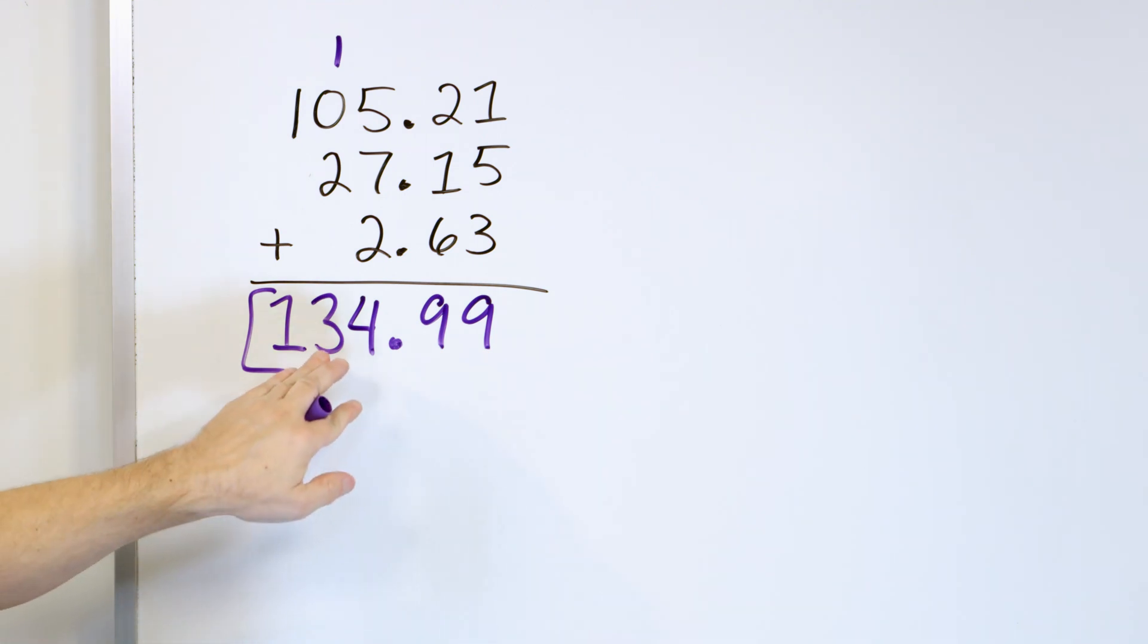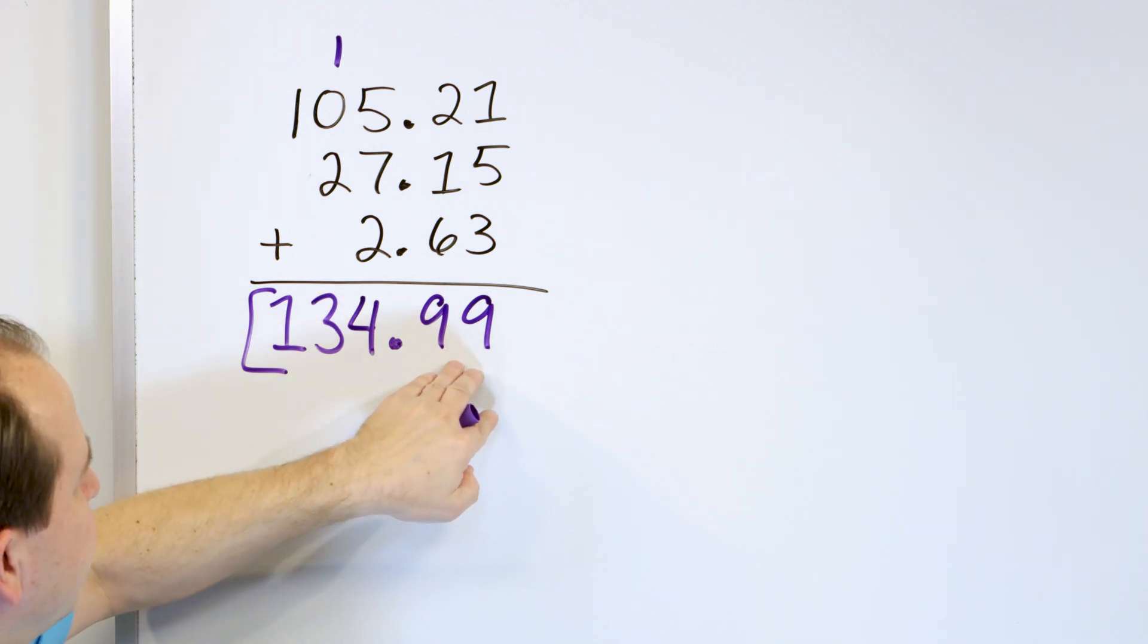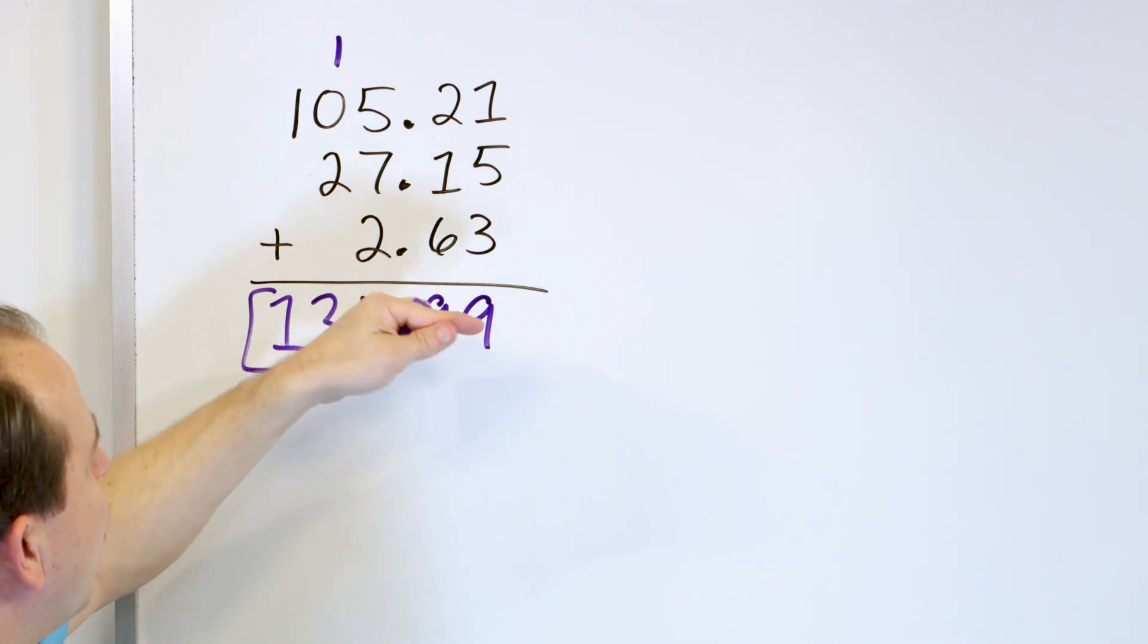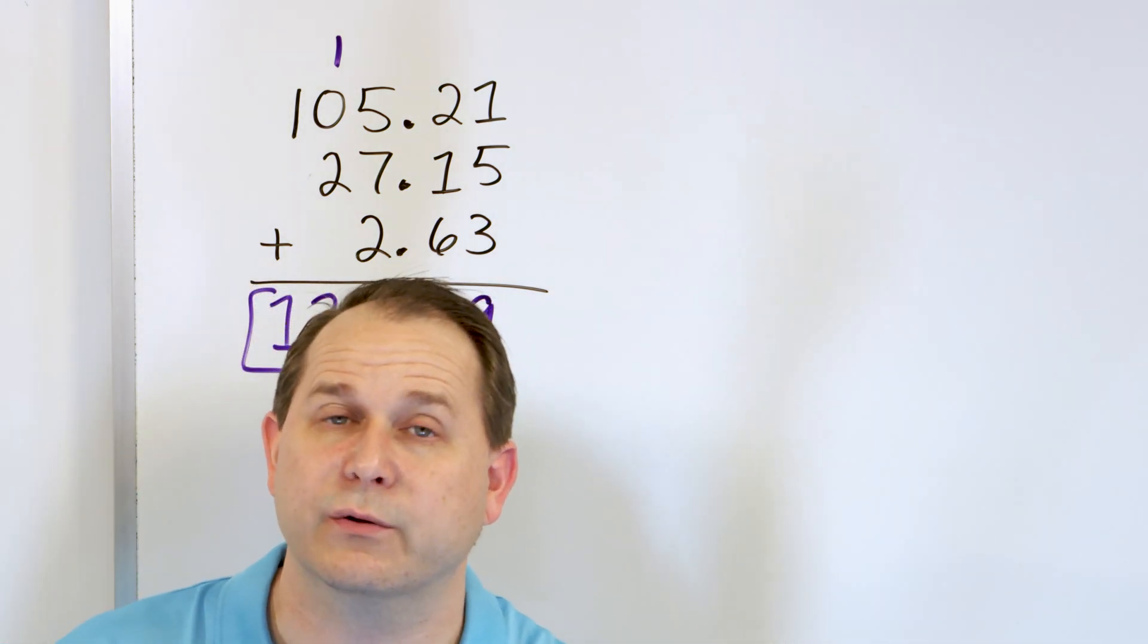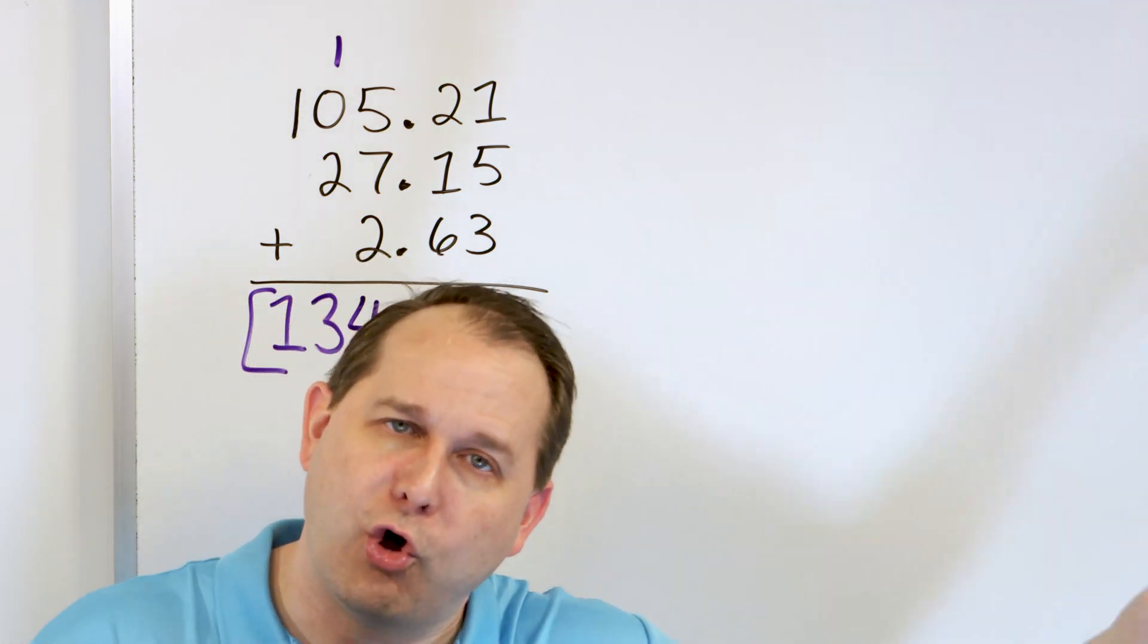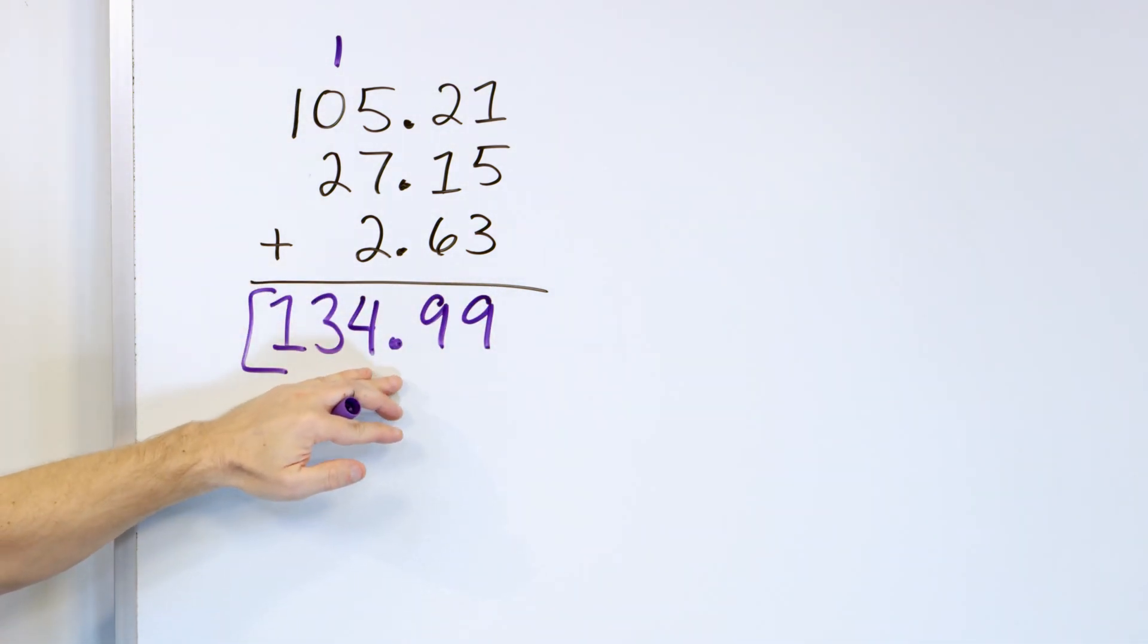Now, what does that mean? That means that's about as close as you can get to 135 as you can be with a decimal to the hundredths place. 0.99, if it rolls over one more, it'll be at 135. So, the 0.99 is telling you that you almost have another hole. So, you almost have 135, but you're not quite there.